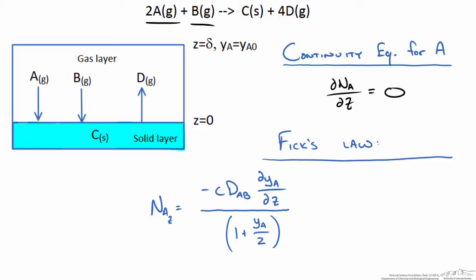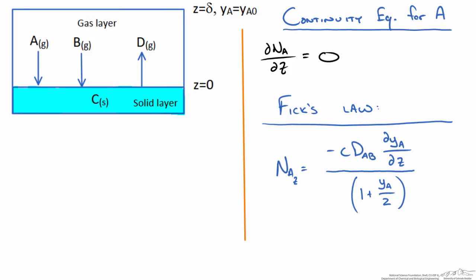This is not quite what we are looking for so we are going to combine the continuity and Fick's law to come up with the following relationship. We know the differential of the flux of A in the z direction with respect to z is equal to 0. We are going to take Fick's law and take the derivative of it with respect to z. To approach this and combine them we can take a first look at the continuity equation. Since the flux of A with respect to z is equal to 0 we can say that the flux of A in the z direction must be a constant and we will call this NAz naught.